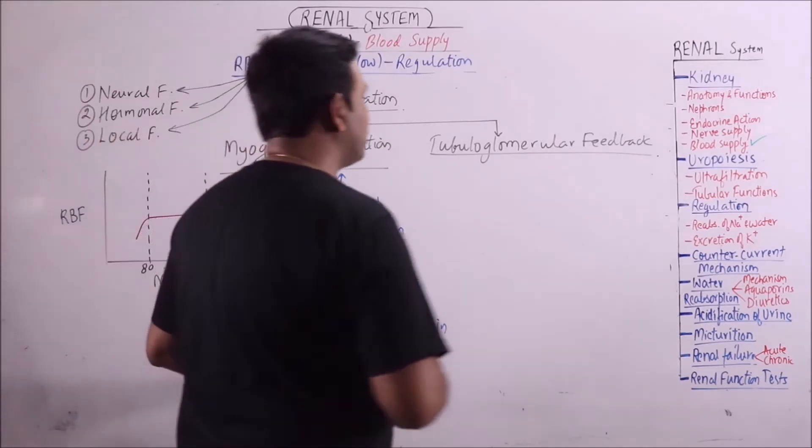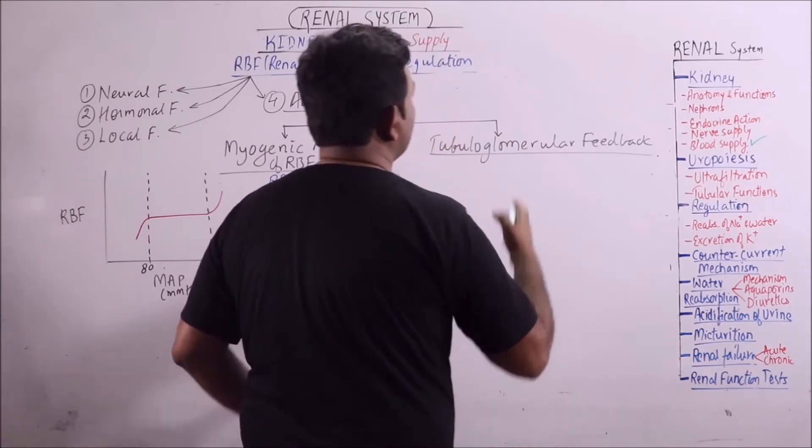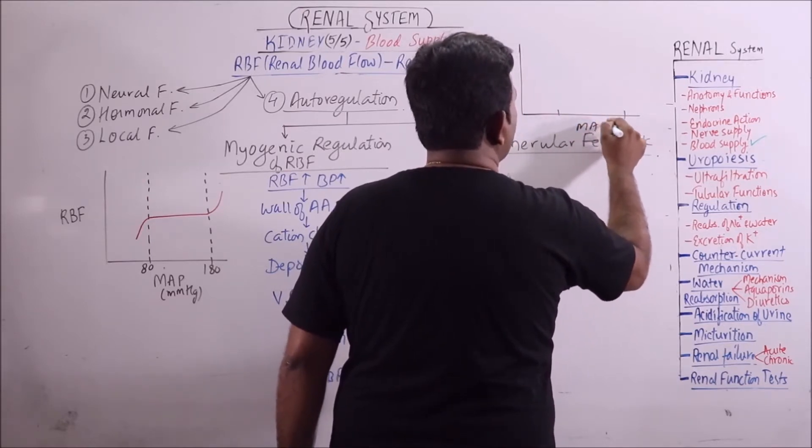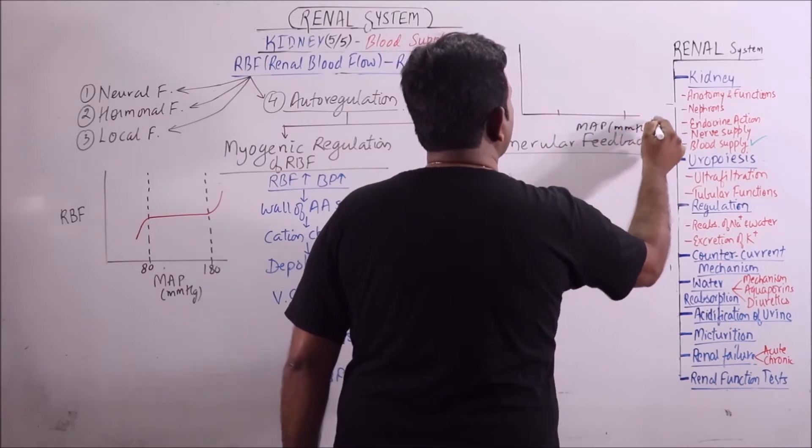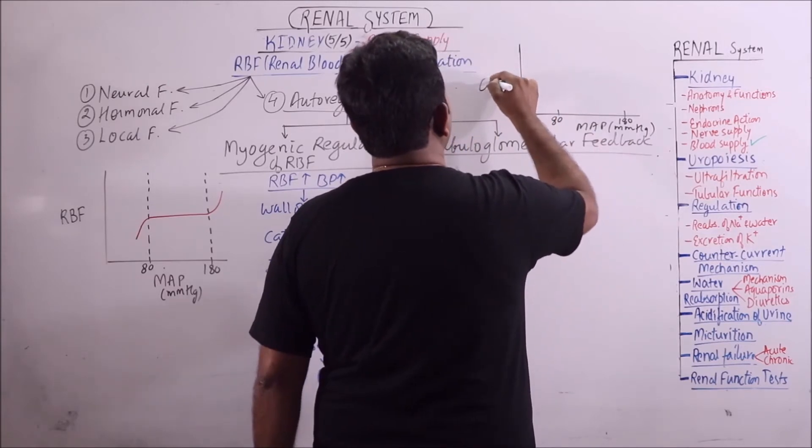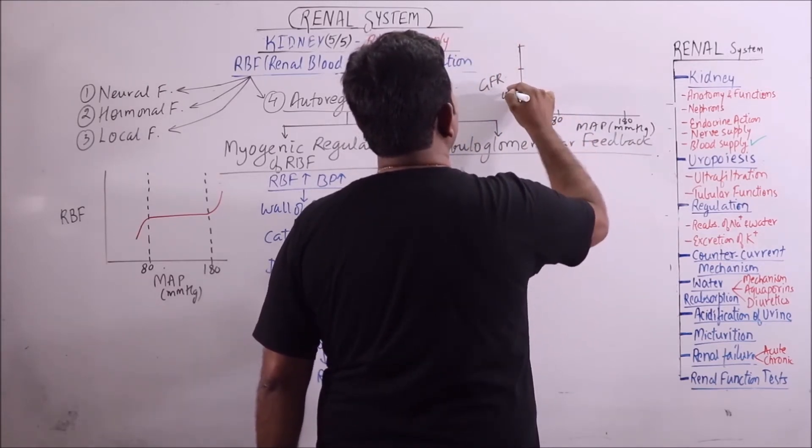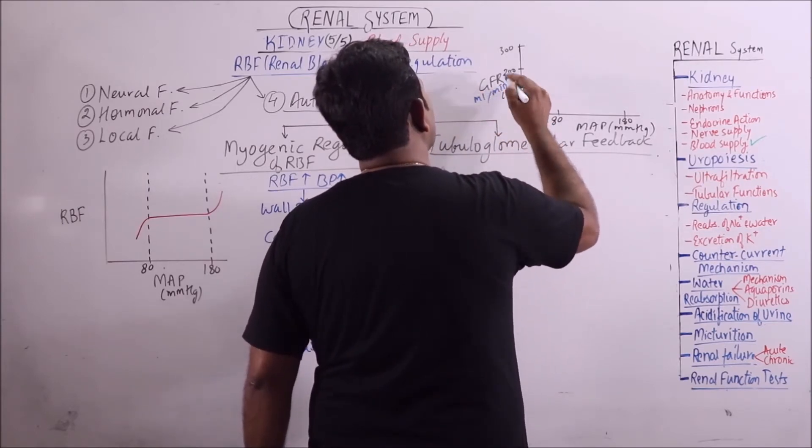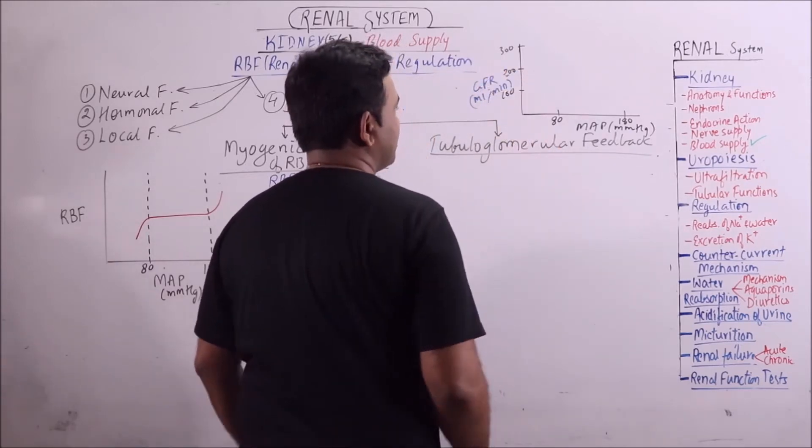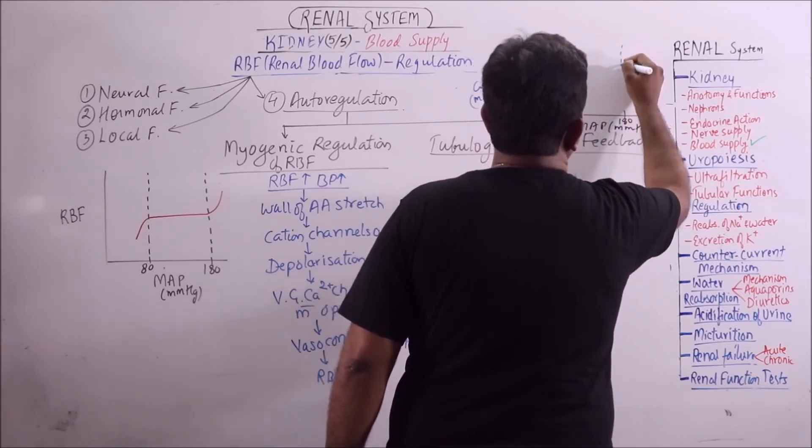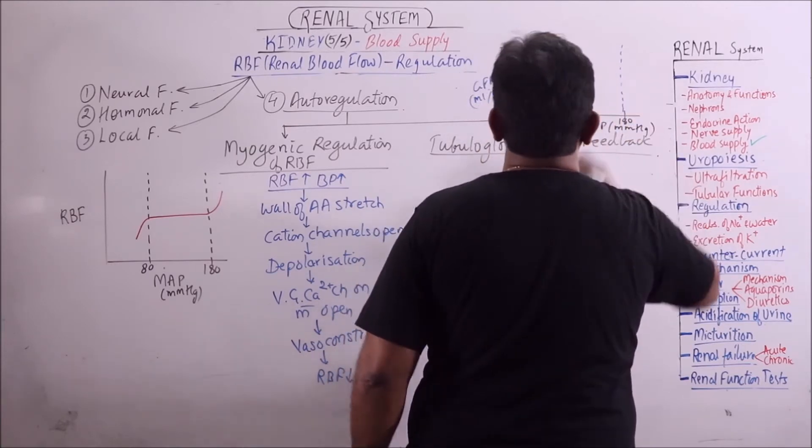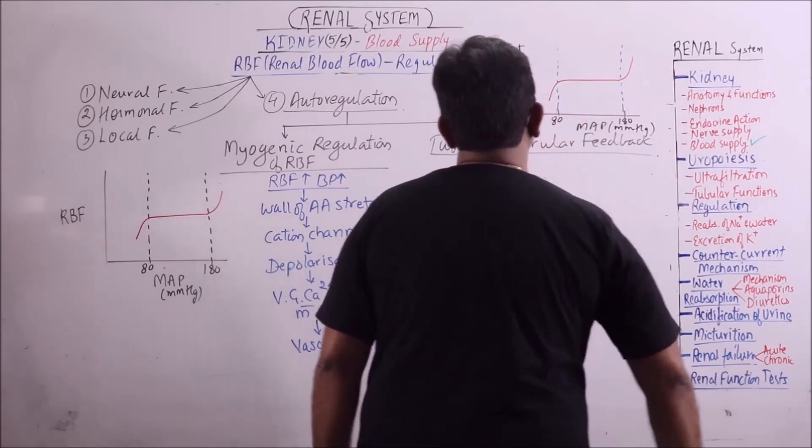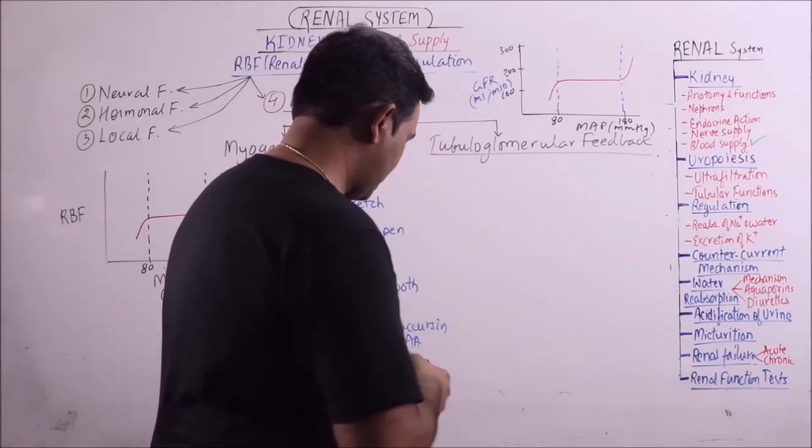Now there is another mechanism that is tubuloglomerular feedback. How it works? It has been observed that again we are taking MAP that is mean arterial pressure in mmHg. This is 80, this is 180 and here it is GFR 100, 200, 300. This GFR is in ml per minute. Now it has been observed that with increase in mean arterial pressure the GFR also increases, but it remains constant between 80 and 180 mmHg. Now what is the mechanism behind?